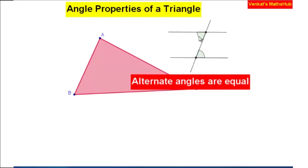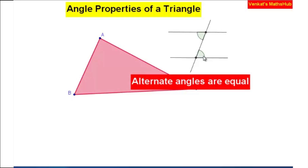This angle will be equal to this angle. When two lines are parallel and there is a transversal, you can see a pair of alternate angles. This and this are also alternate angles — they are equal. Alternate angles are always equal.